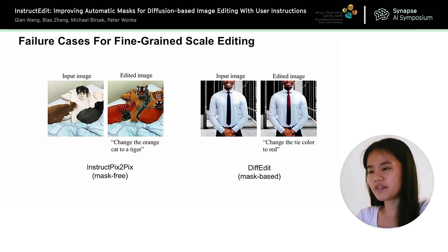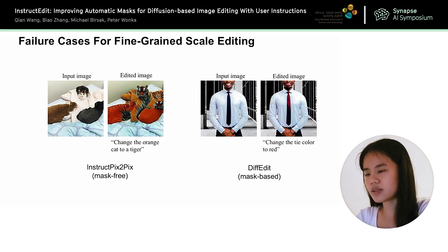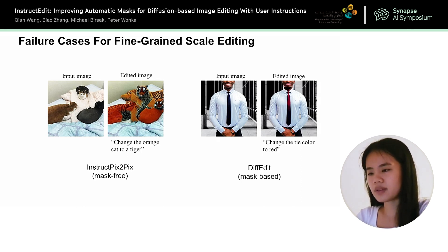However, we identified some failure cases for the aforementioned methods in fine-grained scale editing applications. On the left hand side, InstructPix2Pix is a mask-free method. Given an input image, if we want to change the orange cat to a tiger, InstructPix2Pix fails to locate the region of the orange cat and instead edits all objects, producing unrealistic images. DiffEdit is a mask-based method. For the example on the right hand side, it can change the tie color to red. However, the result is not optimal, as part of the tie is still black.